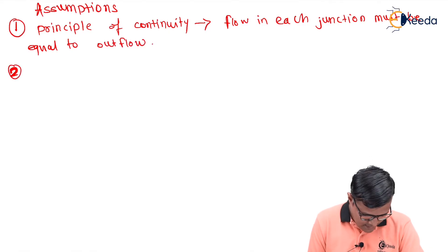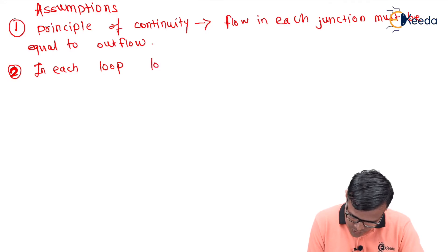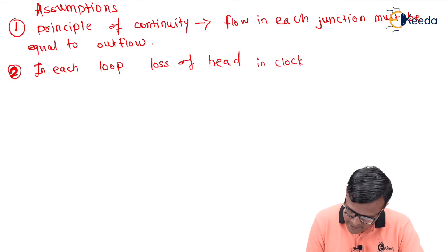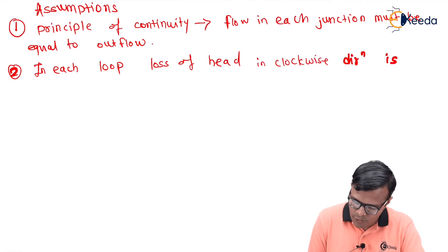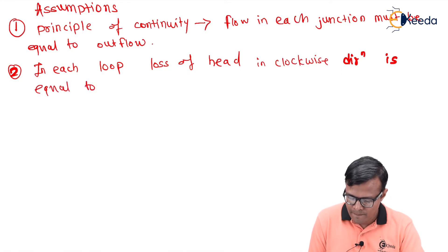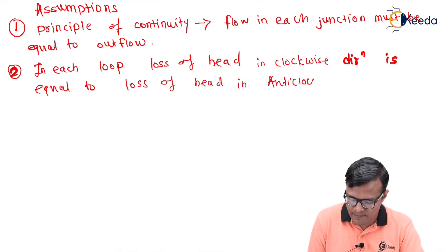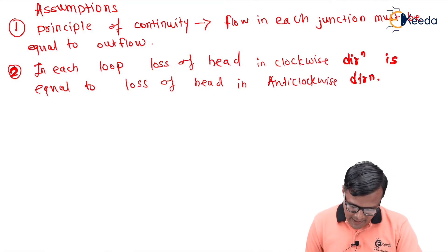The second assumption is that in each loop, the loss of head in the clockwise direction is equal to the loss of head in the anticlockwise direction. To understand this we will refer to the diagram.